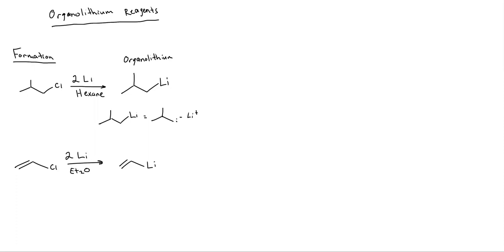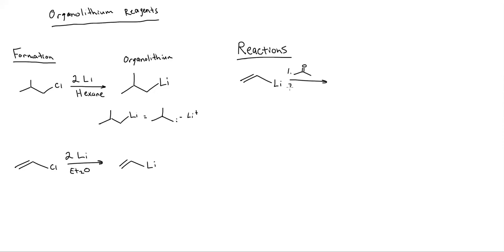Now let's take a look at the reactions, and then we'll talk about one mechanism in this video. So what happens is I take my organolithium — I'm going to take that last organolithium — and I react it with some carbonyl. In this case, I'm going to react with a ketone in the first step, and then in the second step I'm just going to throw in some acid. I take the carbonyl group and turn it into an alcohol.